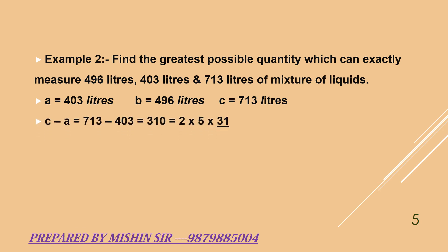So we find C minus A equal to 713 minus 403. We get 310 which is equal to 2 into 5 into 31. Now we find C minus B which is equal to 713 minus 496. We get 217 which is equal to 7 into 31.